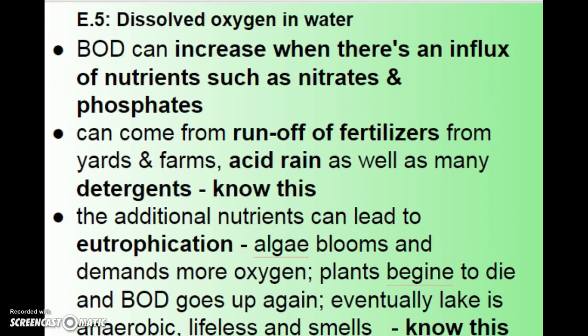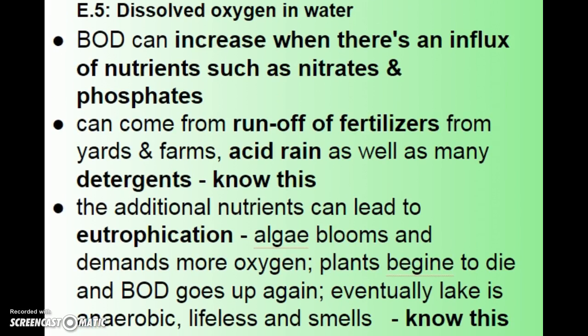What causes BOD to go up? A big factor is runoff — water running off our lawns and farms back into lakes and rivers. BOD tends to increase when there's an influx of nutrients such as nitrates and phosphates, which come from fertilizers on our lawns, pesticides and fertilizers that farms use, and detergents that go out with our wastewater. Acid rain can also contribute. So there are many things that can cause an influx of nutrients into our bodies of water.